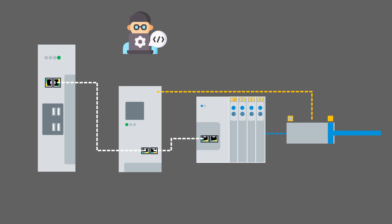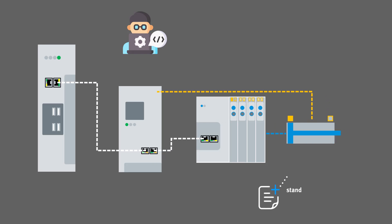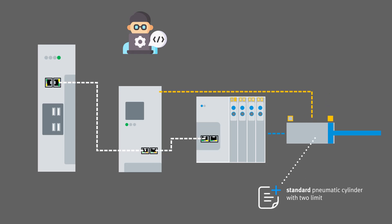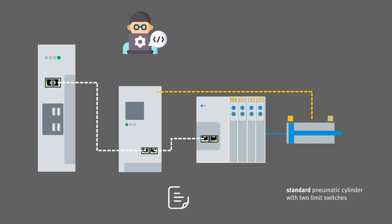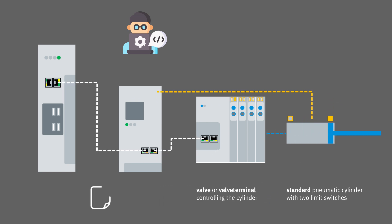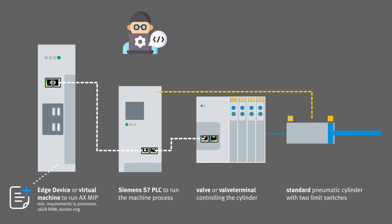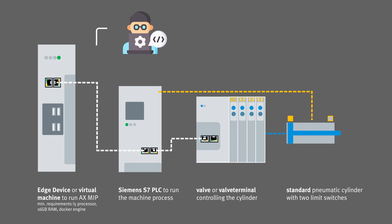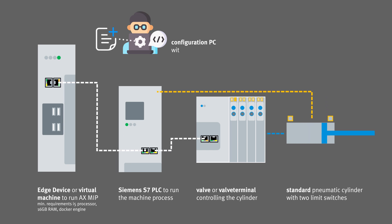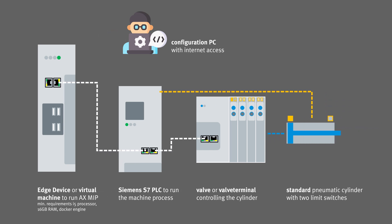Applying Motion Insights pneumatic on your machine has a few prerequisites. You need a pneumatic cylinder with two limit switches, a valve or valve terminal, and everything must be controlled by a PLC gathering all signals. AXMIP will be run on an edge device or virtual machine. To configure everything you need a PC with internet access.